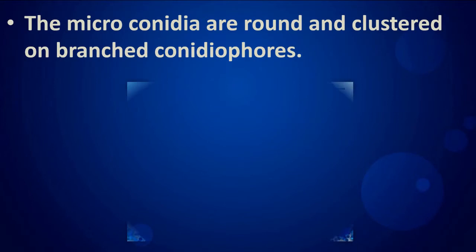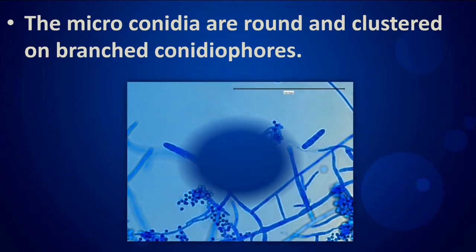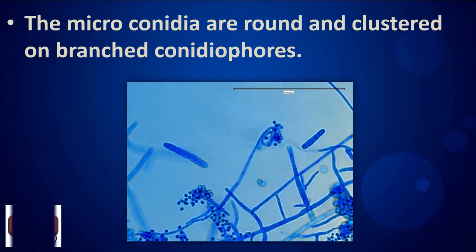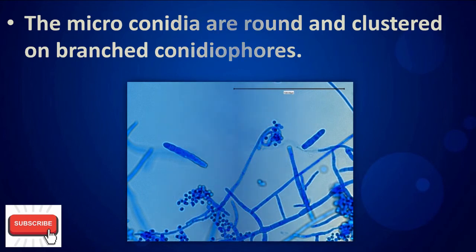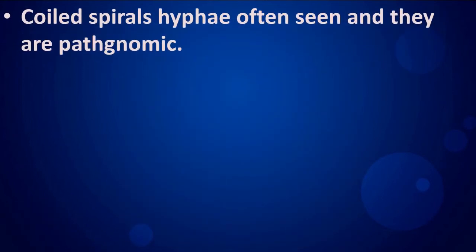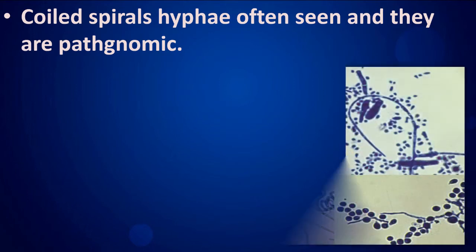The microconidia are round and clustered on branched conidiophores. Coiled spirals in the hyphae are often seen and are pathognomonic for Trichophyton mentagrophytes.